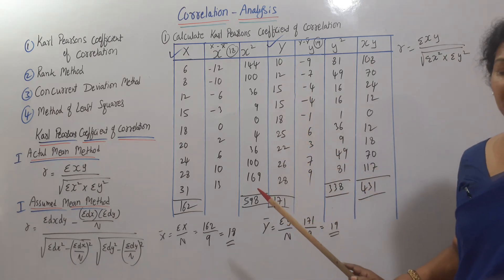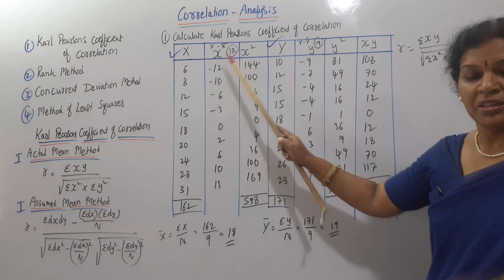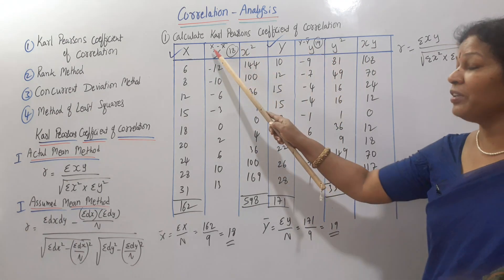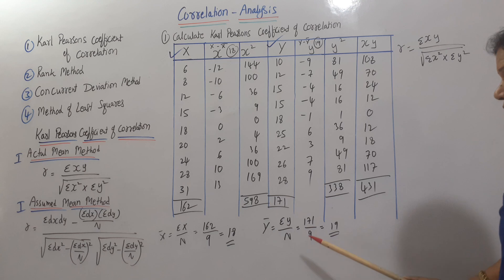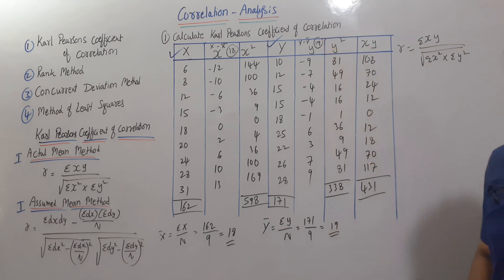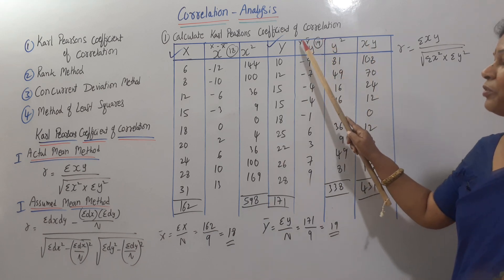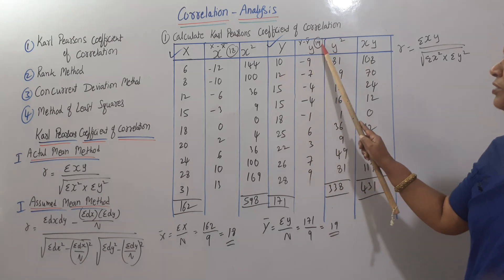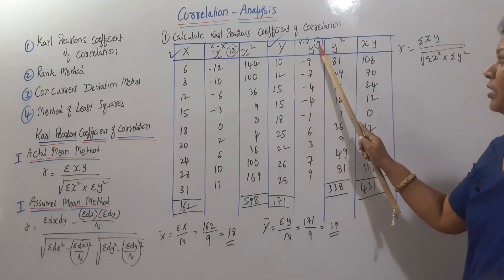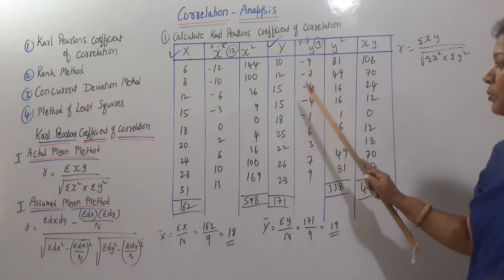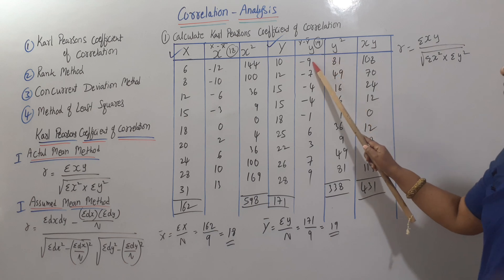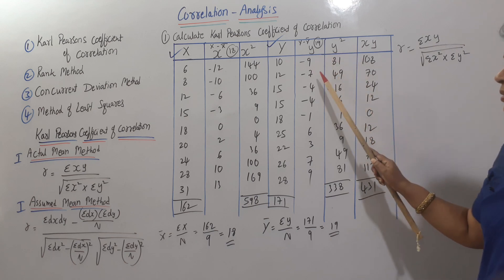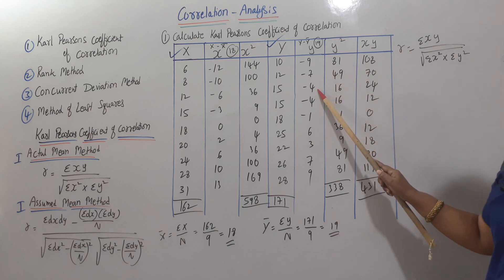Now we already have small y, which is y minus y-bar, where y-bar is 19. For example: 10 minus 19 is minus 9; 12 minus 19 is minus 7; 15 minus 19 is minus 4. For y squared: minus 9 times minus 9 is 81; minus 7 times minus 7 is 49; minus 4 times minus 4 is 16.